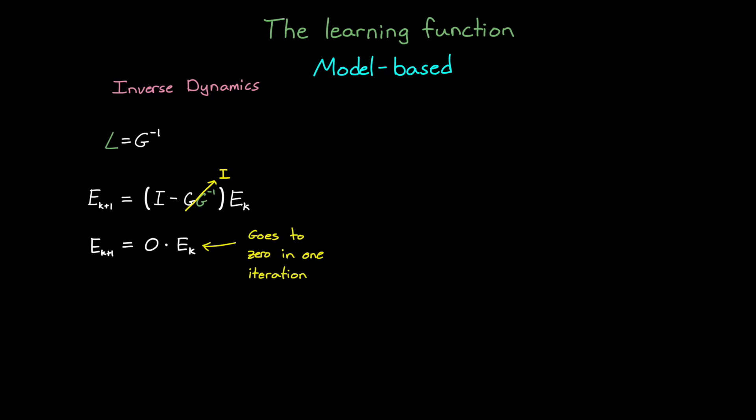But, making the learning function exactly the inverse of g is risky, because we almost never have a perfect model. So inverting it wouldn't completely cancel the system, and it could lead to instability. Therefore, instead of trying to reduce the error in a single iteration, we could add a scalar term, gamma, and we can use that to remove part of the error each iteration.